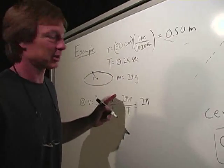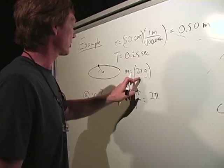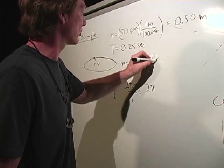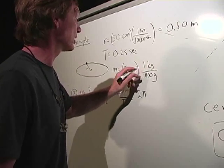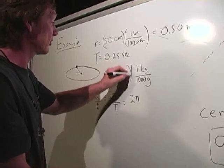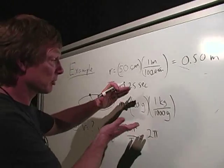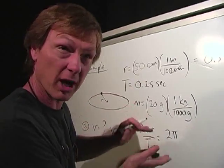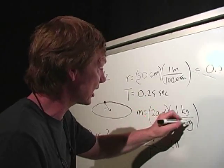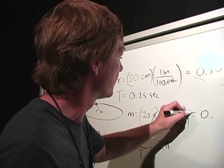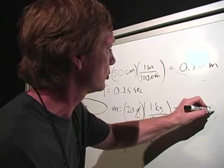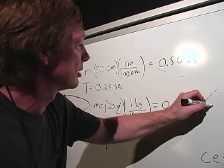Grams, we want kilograms. So I'm going to say 20 grams. There's 1 kilogram for every 1,000 grams. Note again, I'm using nice, horizontal lines. I'm making sure that I've got what's on top looks like it's on top, what's on bottom looks like it's on bottom. So I know that they'll cancel out, and I did it the right way. That'll give me 0.020 kilograms.